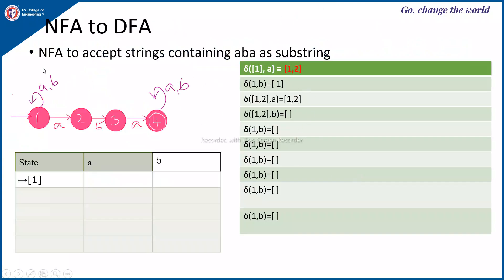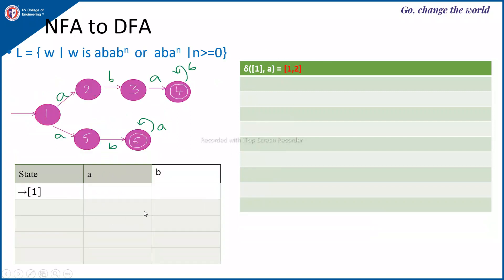Next is an NFA to accept all strings containing ABA as a substring. The start state has self loops on A and B, and transitions spell out ABA leading to the final state, which also has self loops. You start with state 1 and keep adding new states. Similarly, the next NFA handles the language AB or AB to the power N, and again you start from state 1 and continue until no more new states are generated.